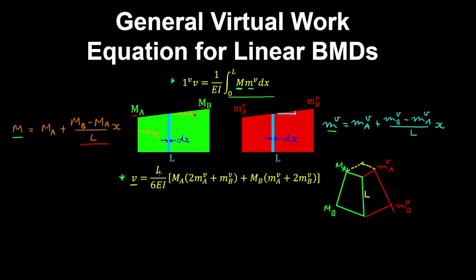And this is quite simple to remember, as l on 6EI, and you have the real bending moments at a and b factored out. And here you have 2ma virtual plus mb virtual. And in the second bracket you have ma virtual plus 2mb virtual.